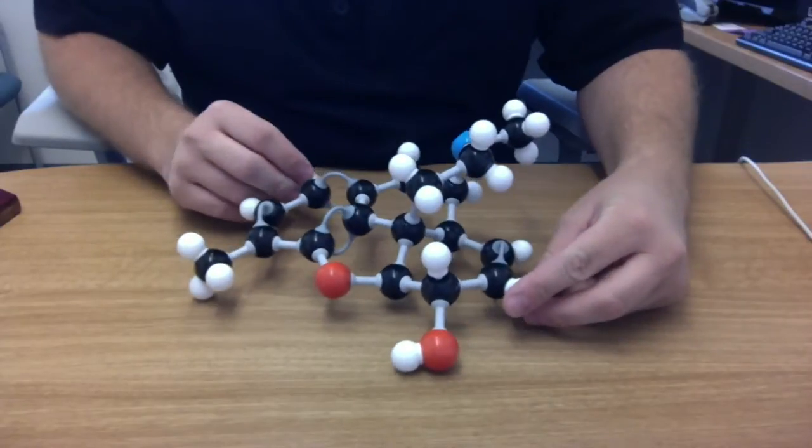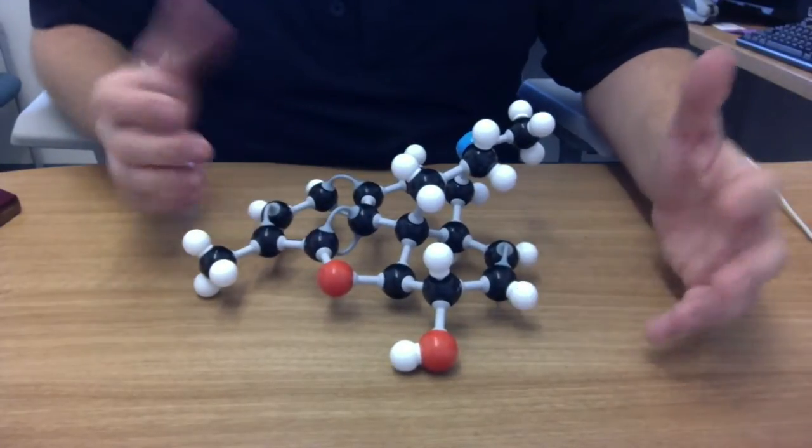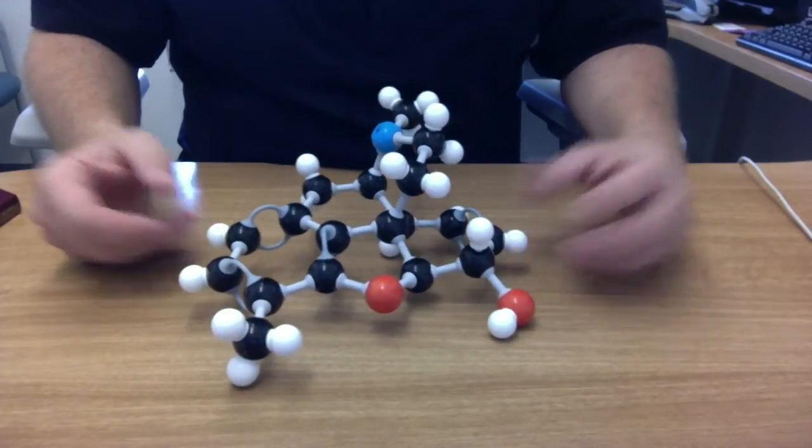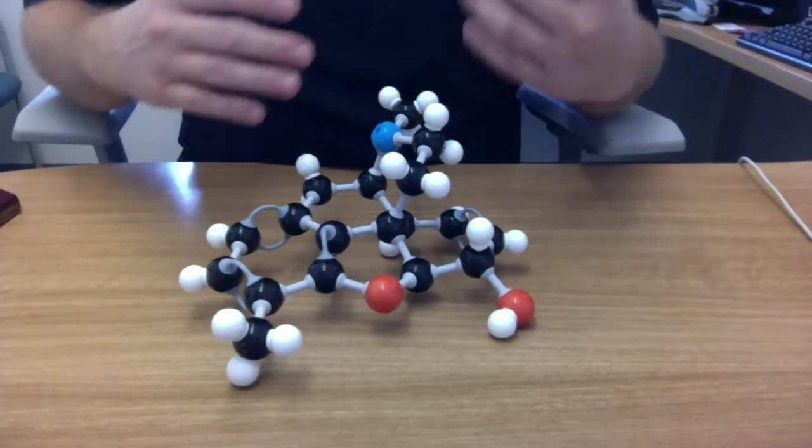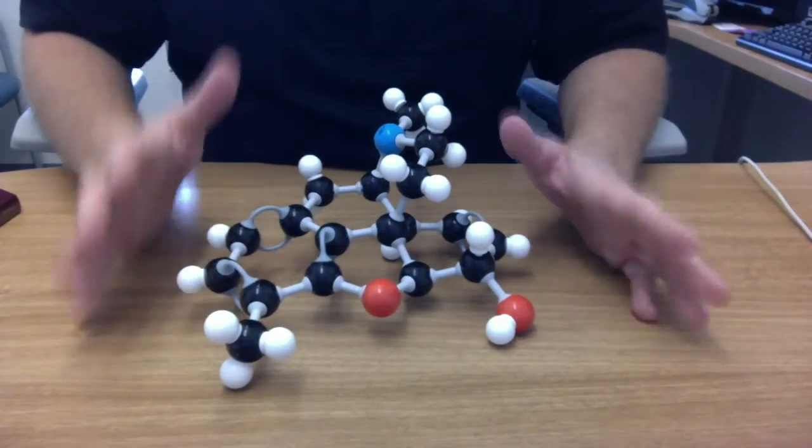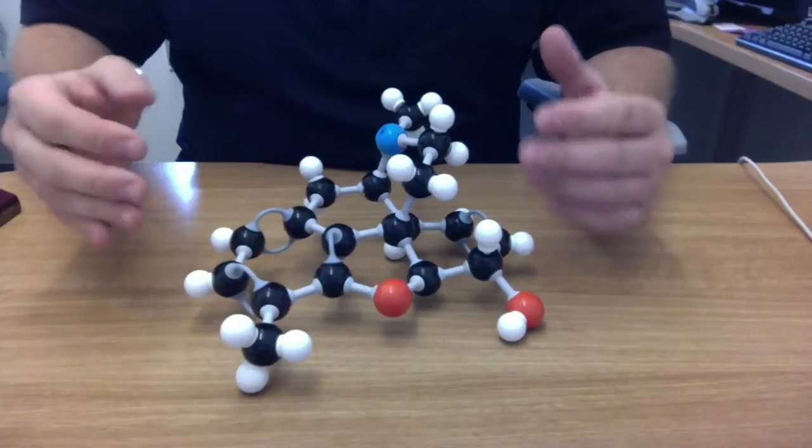Codeine is also found naturally, naturally comes from the poppy, as well as morphine. So to summarize, morphine and codeine are your two major opiates, naturally occurring opioids.